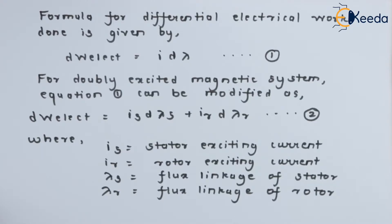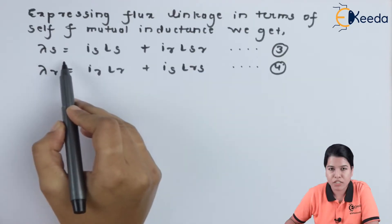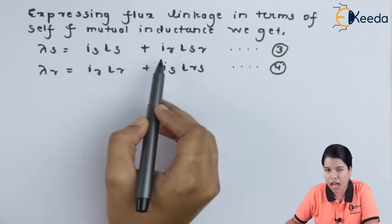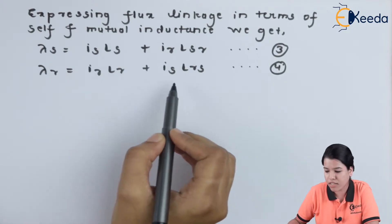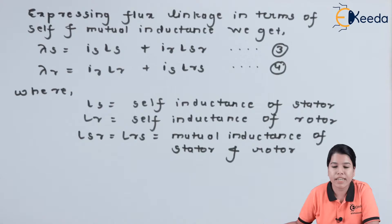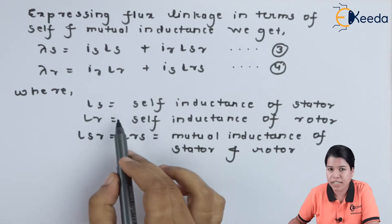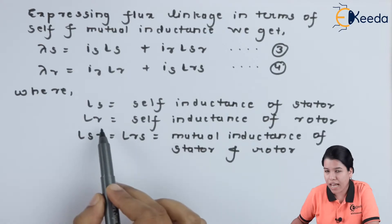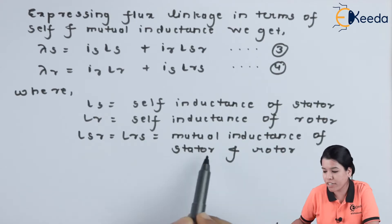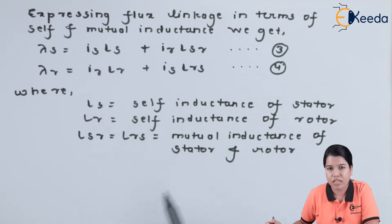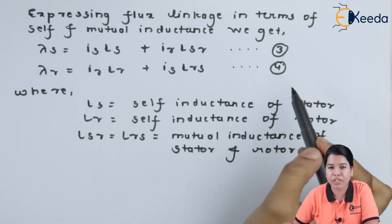We know that flux linkage can be expressed in terms of self inductance and mutual inductance. Hence we write: λS = IS·LS + IR·LSR (equation 3), and λR = IR·LR + IS·LRS (equation 4), where LS is the self inductance of the stator, LR is the self inductance of the rotor, and LSR is the mutual inductance between stator and rotor. Substituting equations 3 and 4 into equation 2,